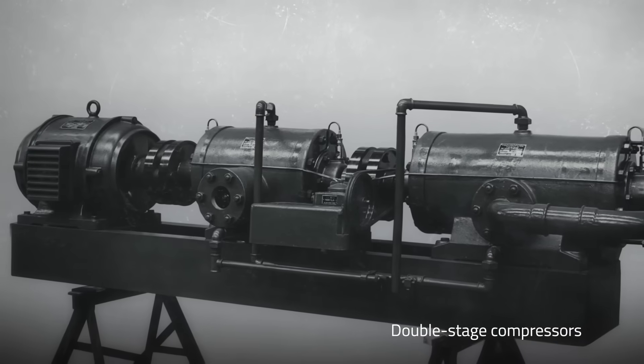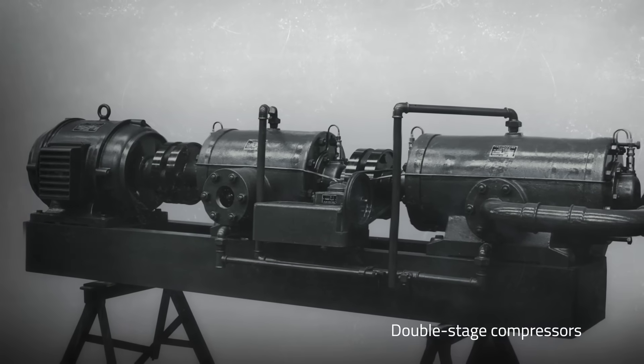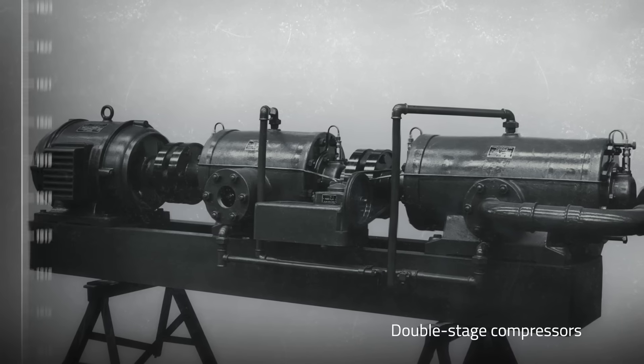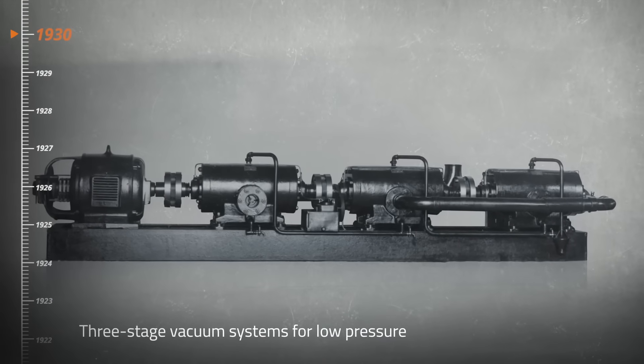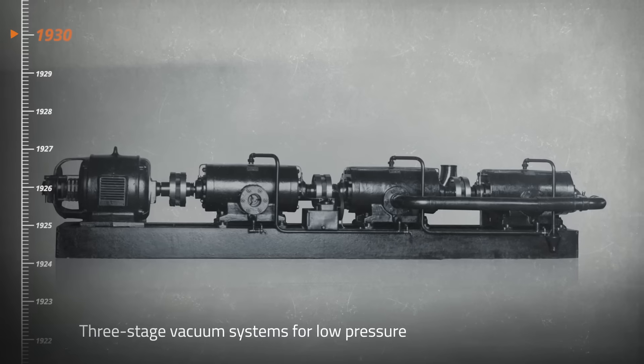Double stage compressors were built for higher pressure values, here 12 bar. Three stage vacuum systems were produced for low absolute pressure in the 30s.